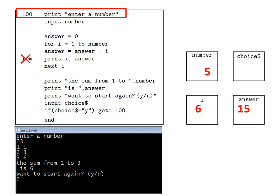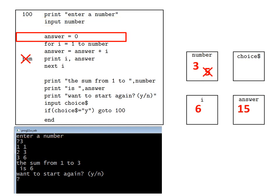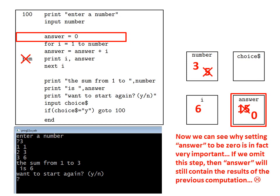Now let's assume that we keep going and when the program prompts us to input number, we enter something different like three. This means that the memory location allocated to the variable number will be updated to three. Then the computer executes the next line: answer equals zero. But now we see that unlike the first run through when answer was initially set to zero, this time answer still contains the results of the previous computation. So the computer deletes this and sets it back to zero. Now we can see why setting answer to zero at the start of the computation is in fact very important: if we omit this step, answer will still contain the results of the previous computation, which we don't want.